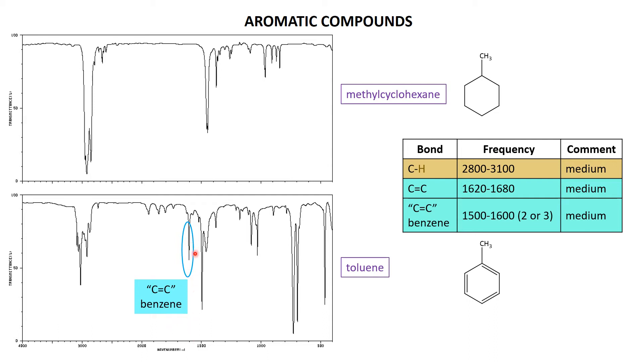You can see it's a double band there, so you usually see two or three bands, two or three signals in that particular region for the benzene. And of course, the benzene ring, the toluene has it, and the methylcyclohexane doesn't have it.